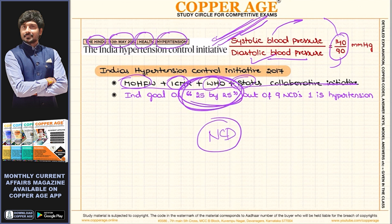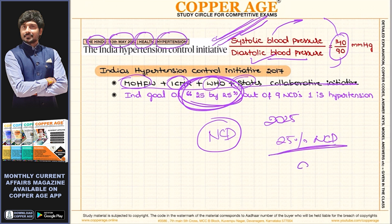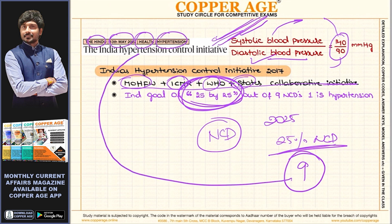What is the 25 by 25 goal? By 2025, we aim to reduce non-communicable diseases by 25%. One of the key non-communicable diseases in this goal is hypertension, which is why it is in the news.